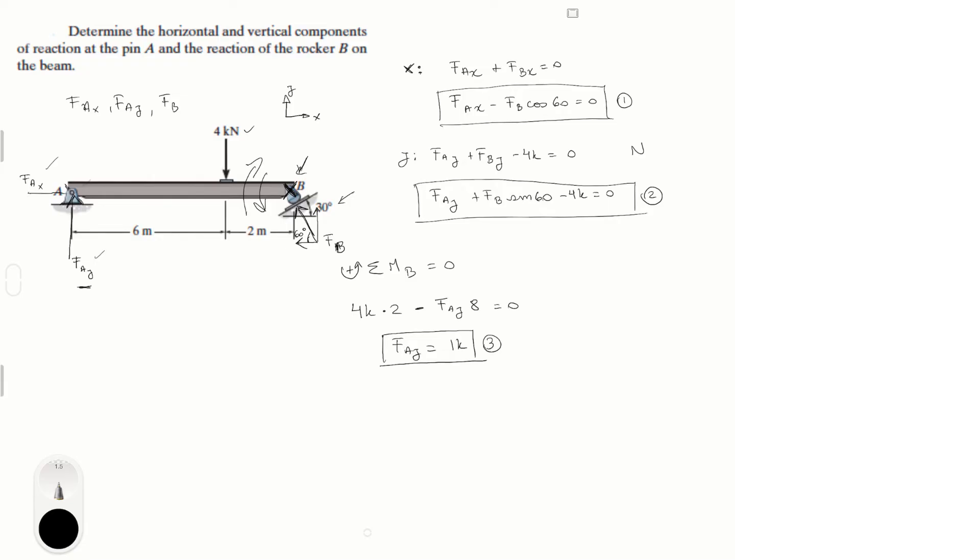Now this, let's call it equation 3, and we're going to plug it into equation 2. And we get that F of B times sine of 60 minus 3K is equal to 0. This allowed us to solve for F of B, which is equal to 3K over sine of 60. And F of B should be equal to 3.464 kilonewtons. This is also in newtons, by the way.